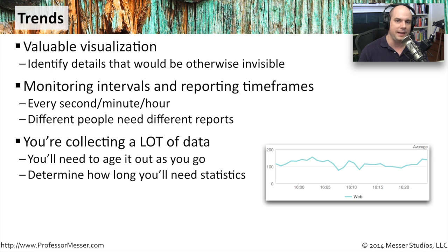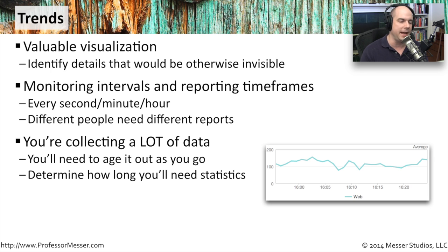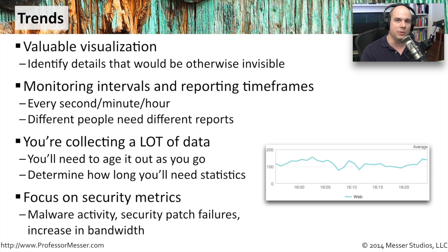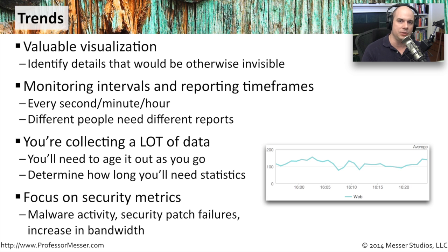When you start collecting data, you are absolutely going to be collecting a lot of information. These visualization and polling tools are often able to age out information as you go. You might keep one-minute intervals for 30 days, but after 30 days, take those one-minute intervals, average them out to an hour, and store just the hourly data. That way you're reducing data points and storage while summarizing information over a longer time frame. Sometimes you'll need to configure those roll-ups yourself and think about how long you need raw statistics. If someone six months from now wants a minute-by-minute breakdown, you'll need to keep that raw data over a much longer period.